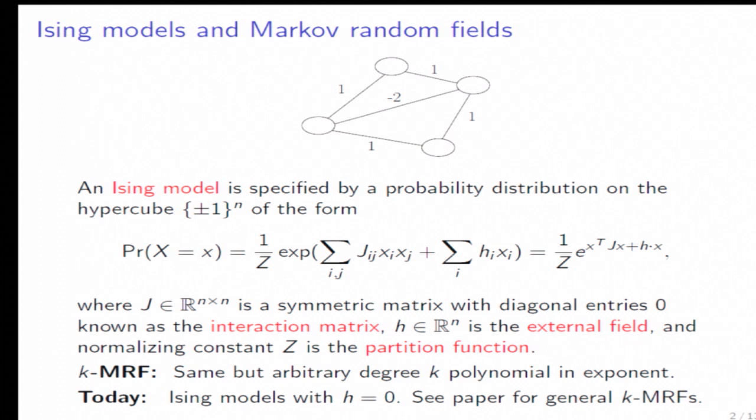And the way to interpret this is, okay, the h-s are just some bias terms. We call that external field. And the J-s, those are more important. Those are the interactions. So if J_ij is positive, it means i and j want to be the same. If it's negative, it means they want to be different. But you can see in this example, there could be negative and positive interactions. So what actually happens could become complicated.